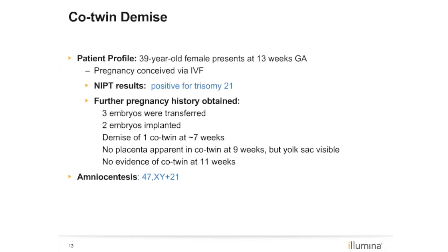Here is another case with a co-twin demise. Blood was drawn for a female patient 13 weeks pregnant post-IVF treatment with three transferred embryos. Two embryos initially implanted, but an ultrasound in the first trimester showed only one viable embryo, with an estimated demise at seven weeks for the other implanted embryo. By week 11, there was no evidence of any products of conception for the demised embryo. The patient's NIPT results were consistent with trisomy 21. Amniocentesis was then performed and results were consistent with a male fetus with trisomy 21. This case reminds us that even in cases where there is a history of co-twin demise, one must still follow up appropriately — especially when there is an extended amount of time from demise to blood draw.